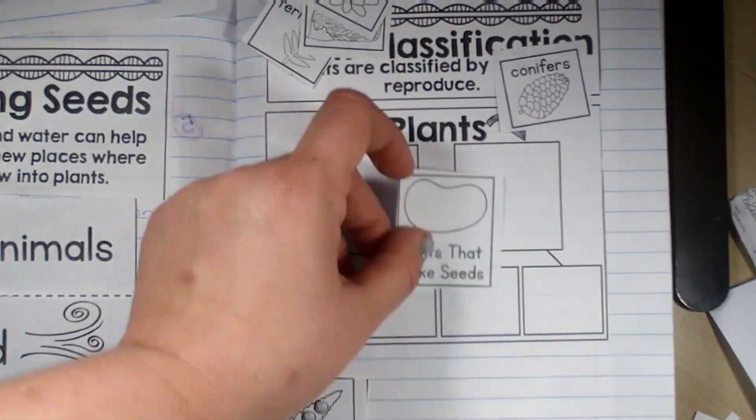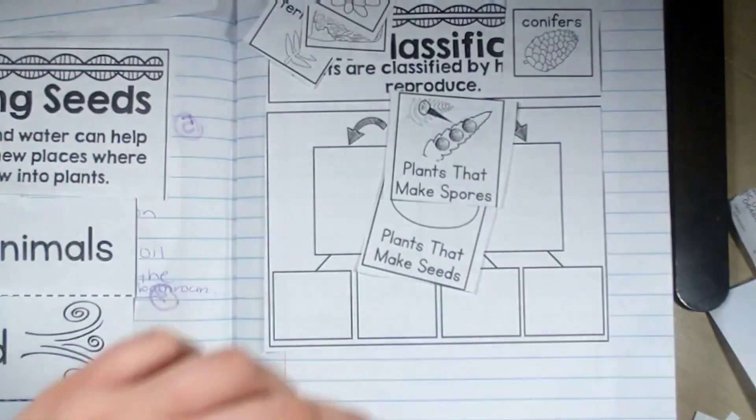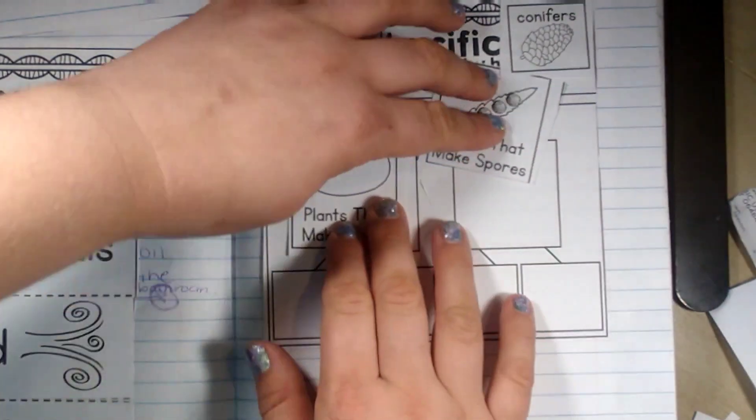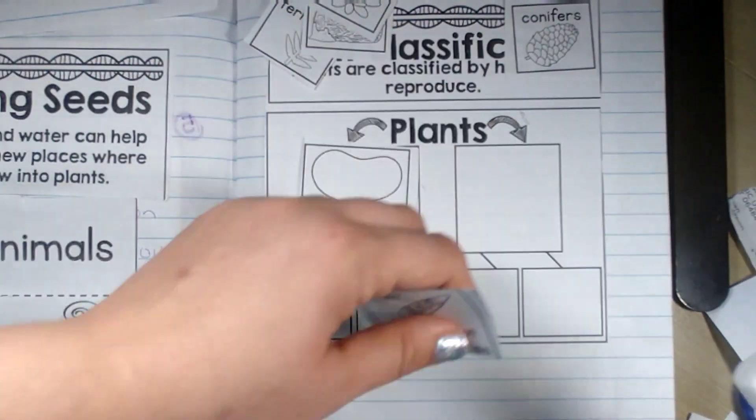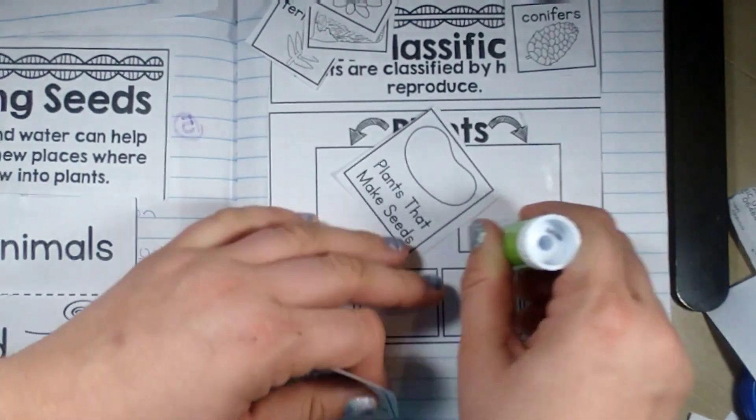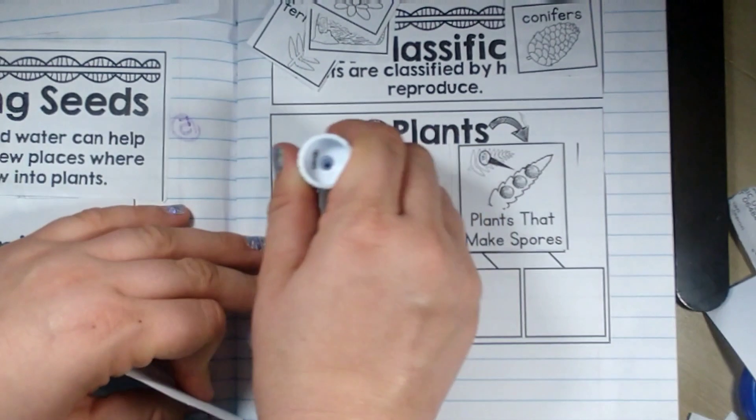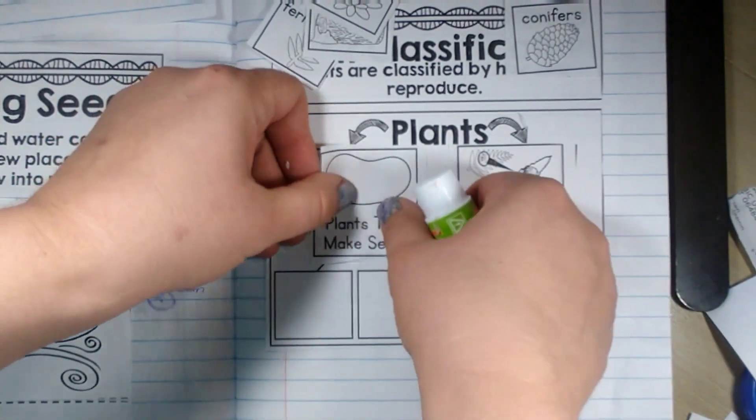We're going to make sure we have these two first. Plants that make seeds and plants that make spores. We're going to glue this in.